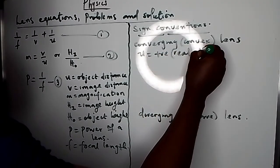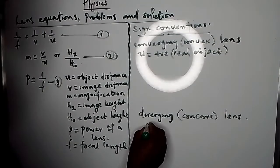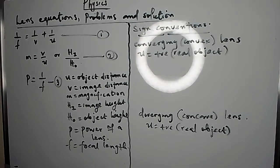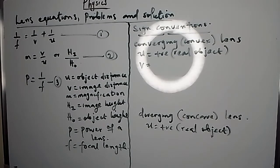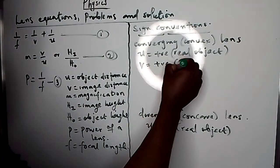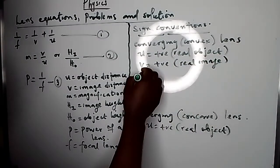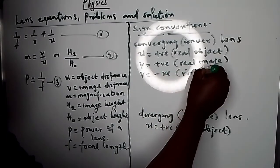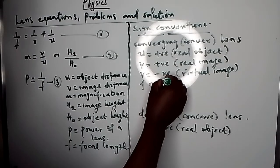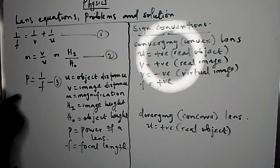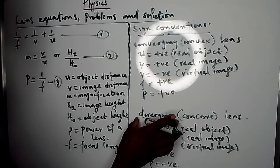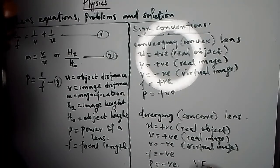For a real object, V is positive. The image distance V is positive for a real image — anything real has a positive sign — and V is negative for a virtual image. F is positive for a converging lens, and if F is positive, automatically your P is also positive. For a diverging lens, the image formed is always virtual, erect, and diminished.